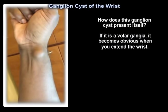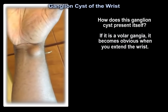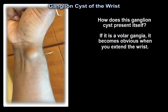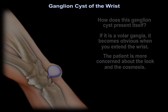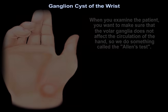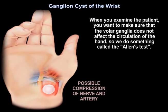If it is a volar ganglion, it becomes obvious when you extend the wrist. Patients are more concerned about the appearance and cosmesis. When examining the patient, you want to make sure the volar ganglion does not affect the circulation of the hand, so we perform the Allen test.